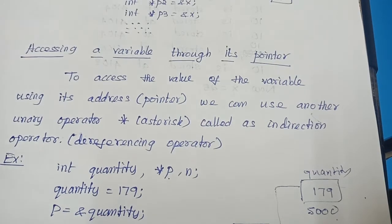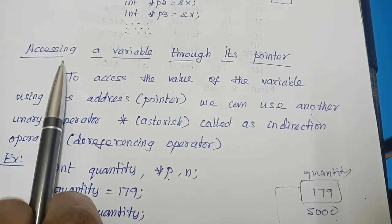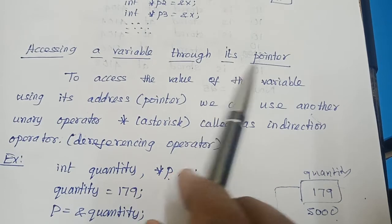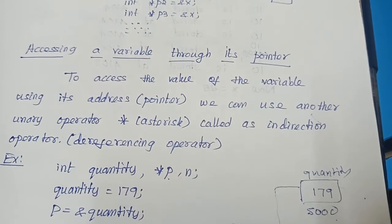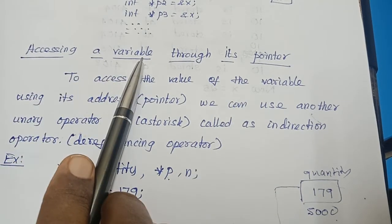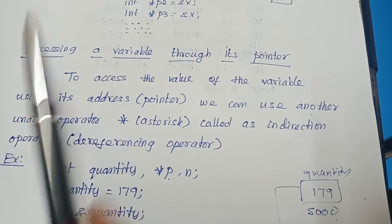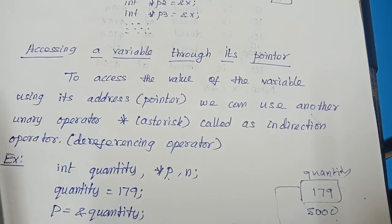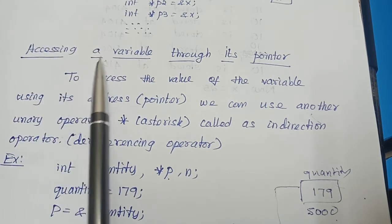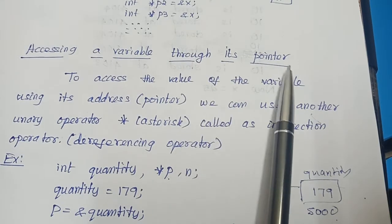Now let us see accessing a variable through its pointer. Accessing a variable means how we are going to make use of the value of a variable through its pointer variable.